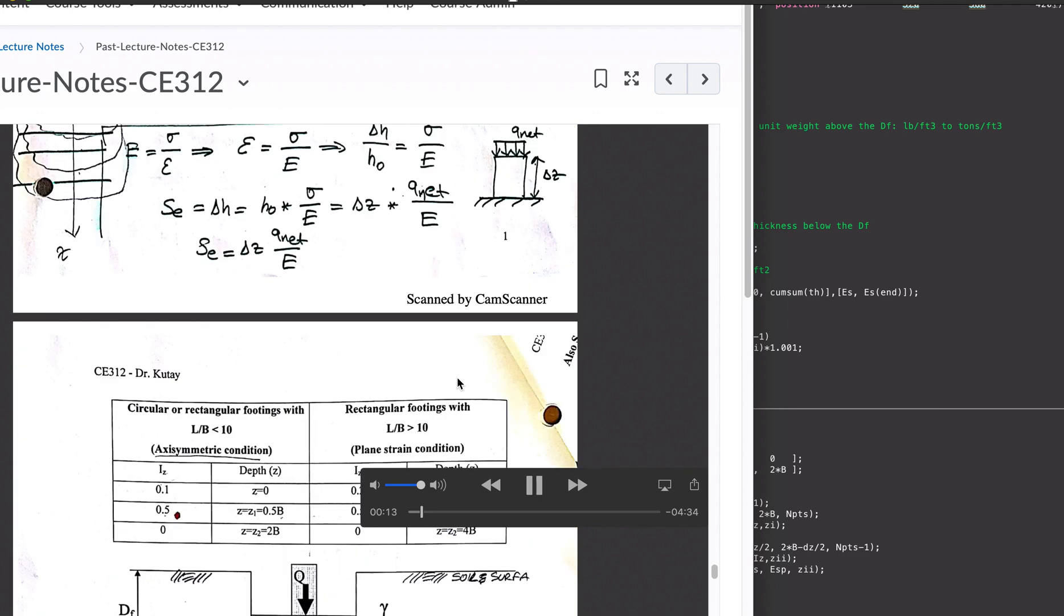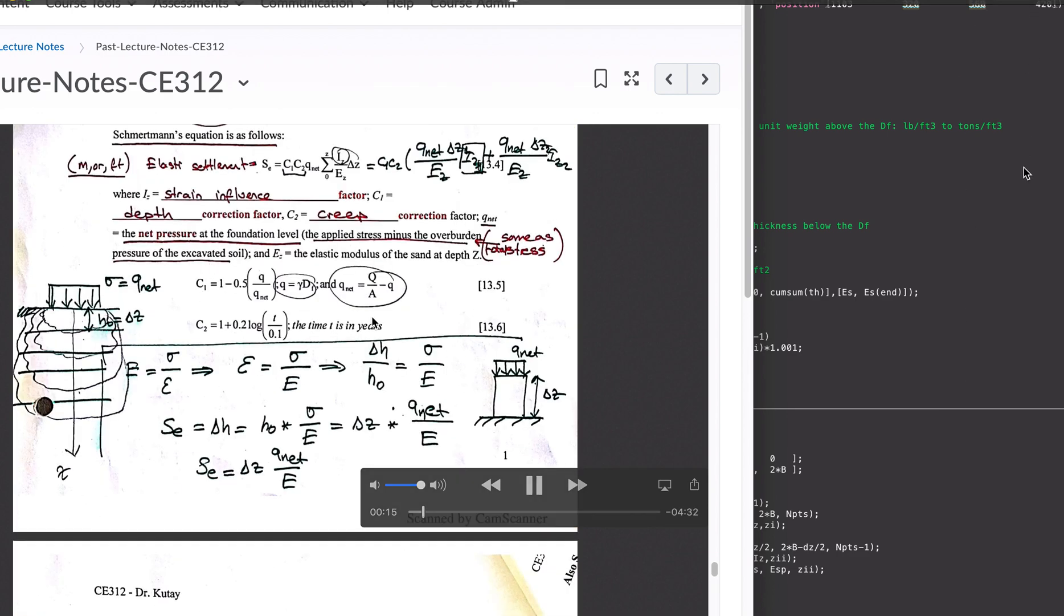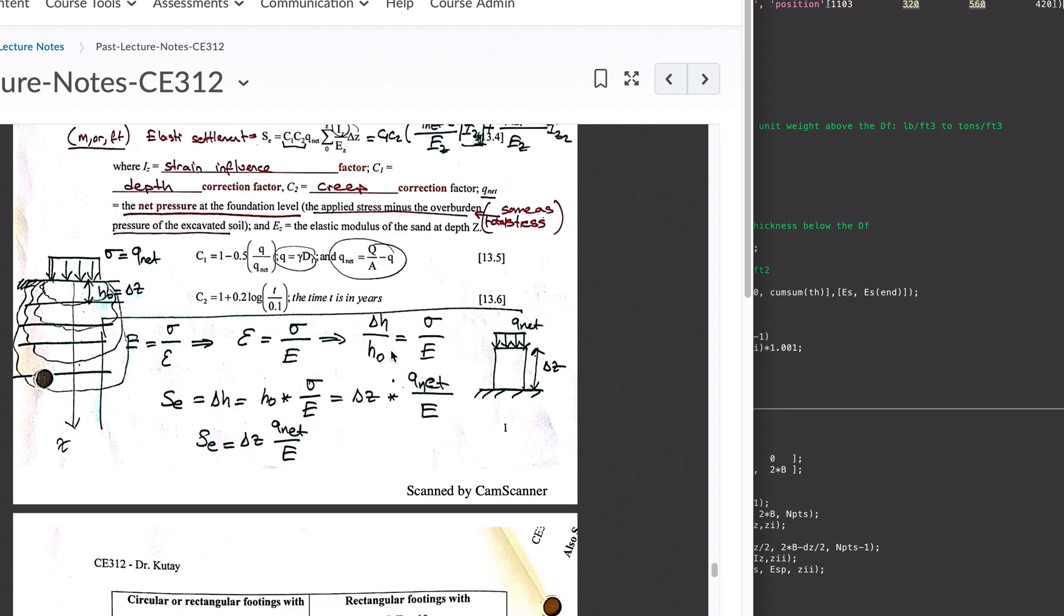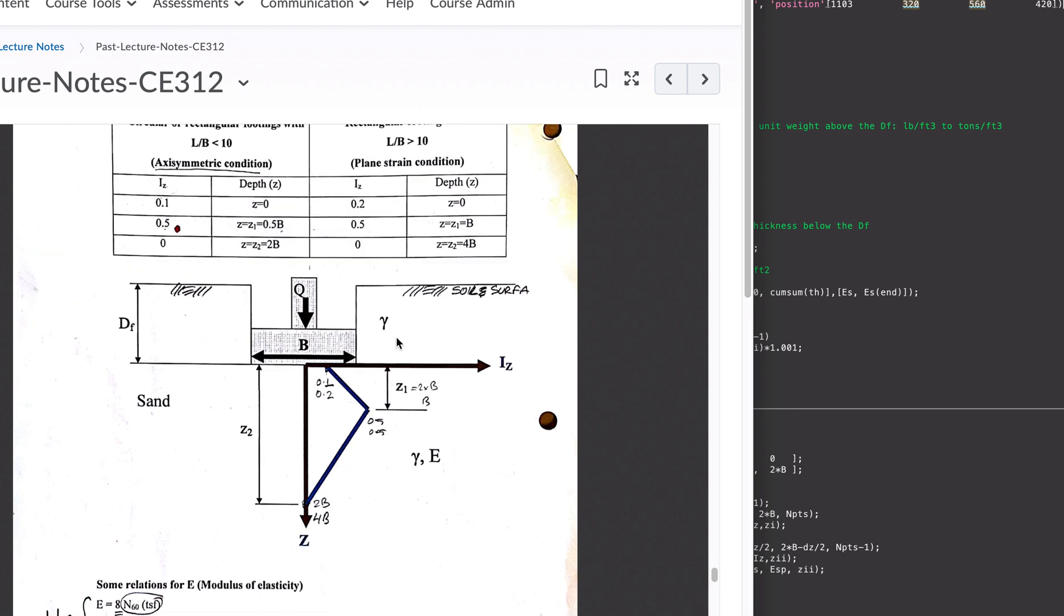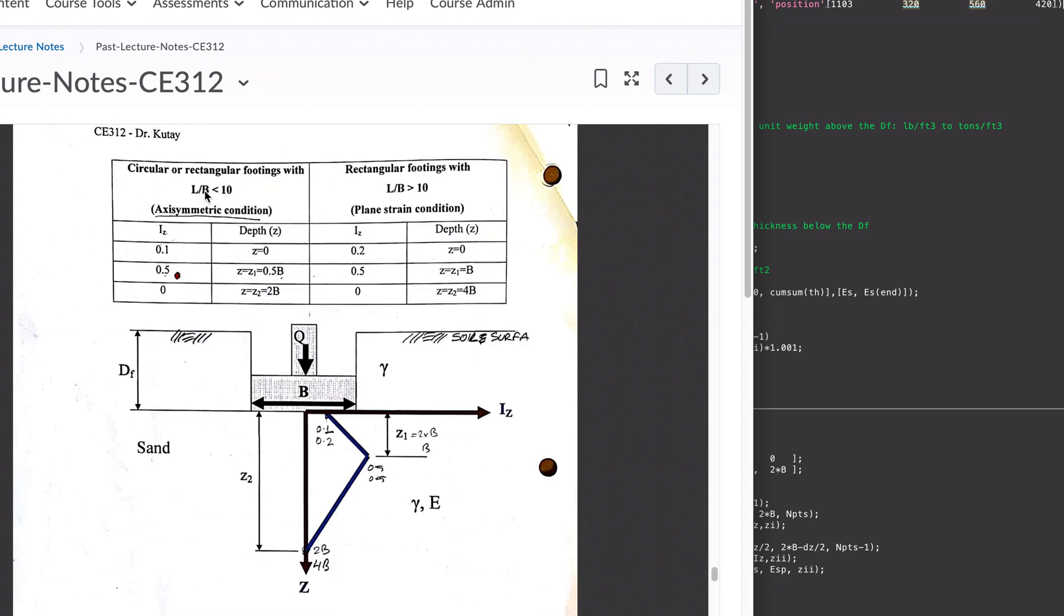Part of the solution involves looking at this equation which includes IZ, EZ, and double Z. The most important portion is calculating IZ, which is the performance factor. You have two options depending on the length to width ratio of the footing. If L divided by B is less than 10, you use this table; if it's larger than 10, you use this table.